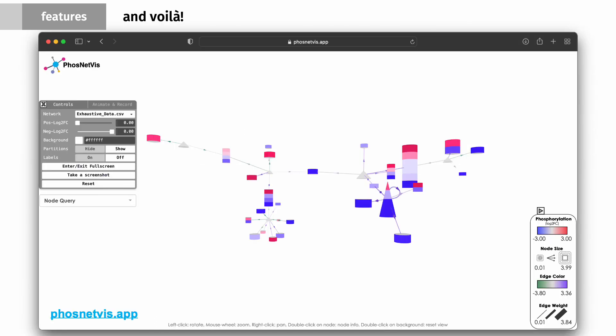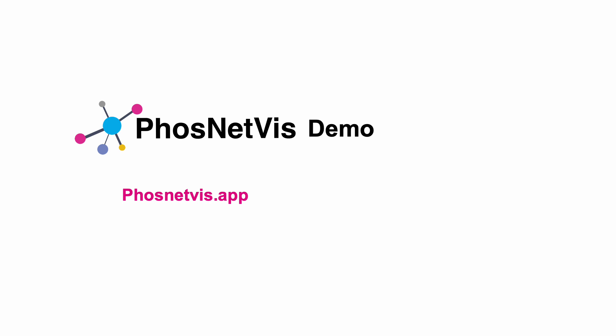And voila! Here we have a snapshot of the PhosNetViz network visualization user interface, where we have a toy network in the middle, with the kinases in triangles, even self-phosphorylation is represented, and we have proteins that are phosphorylated with multiple phosphosites. On the left we have a control panel, on the right we have the figure legend. Now we will have a quick demo of PhosNetViz.